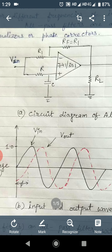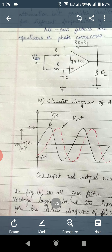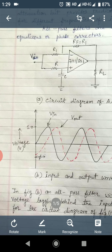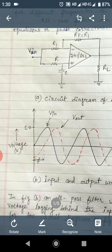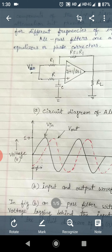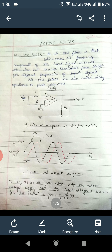This can be seen clearly from figure B, which shows the input and output waveforms. From this figure we can see that the output voltage is lagging behind the input voltage by the phase shift phi. The value of phi can be adjusted to make a desirable phase difference.